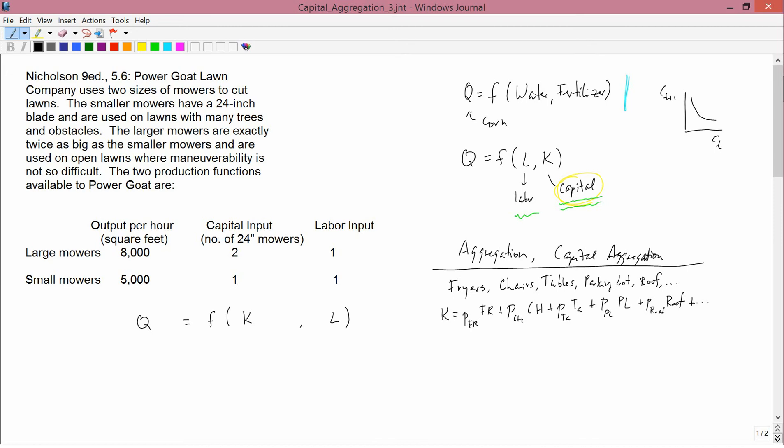No one would say in answer to the question, how much capital is used in a fast food restaurant, that the answer is, well, you should weigh the asphalt of the parking lot, and you should weigh the ovens, and you should weigh the chairs, and you should weigh the roof, and then you add up all the pounds or kilograms that they weigh. Nobody would do that.